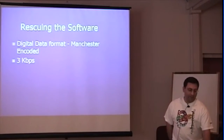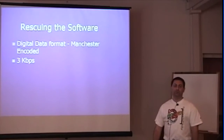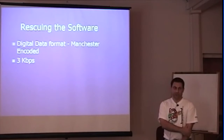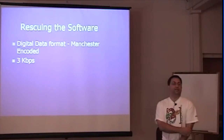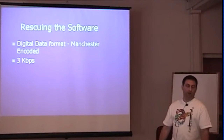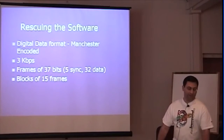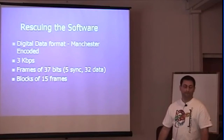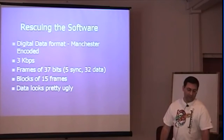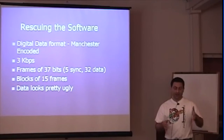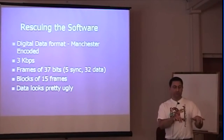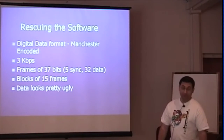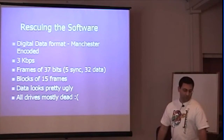What I ended up doing was writing about five or six programs to dump the tapes with a standard cassette deck, then start processing the heck out of the data to find out what was going on. As it turns out, there were sections where data was missing. Looking at the format, it was about 3 kilobits per second — pretty fast for a digital tape drive. It had frames of 37 bits in a row, with 5 sync bits, 3 kilobits, and then blocks of 15 frames. But there were sections that were missing — all derived from mostly corrupted data.